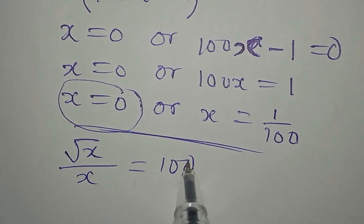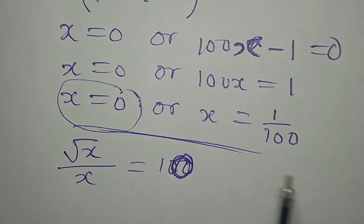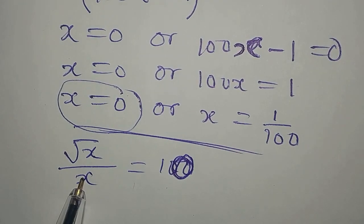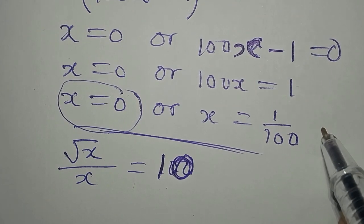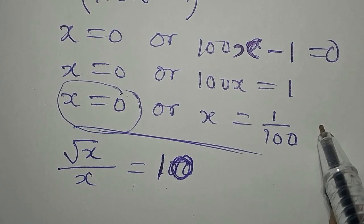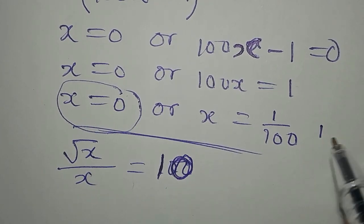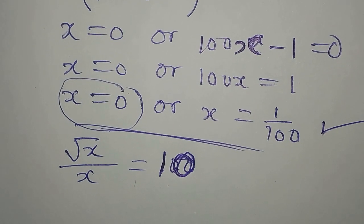But if you put... sorry, this is supposed to be 10. If you put this here, it will give you 10. So this means that the value of x should be 1 over 100, and not 0. Thank you for watching.